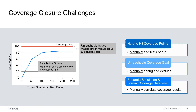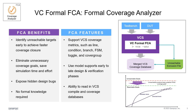Making achieving 100% coverage closure a challenging task. A better flow is to automate the process using formal unreachability analysis, typically referred to as UNR. VC Formal FCA reads the VCIS coverage database and performs formal exhaustive unreachability analysis on the remaining uncovered goals to see if they are reachable. It generates an exclusion file for the unreachable goals for designers and verification engineers to review and exclude from VCIS coverage analysis. VC Formal FCA is integrated with VCIS to offer a seamless flow and supports all VCIS coverage metrics.